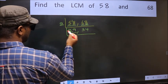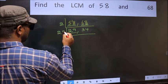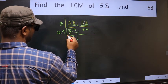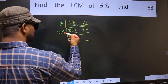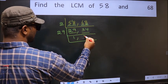Now here we have 29. 29 is a prime number. So 29, 1 is 29. The other number, 34. Not divisible by 29. So we write it down as it is.